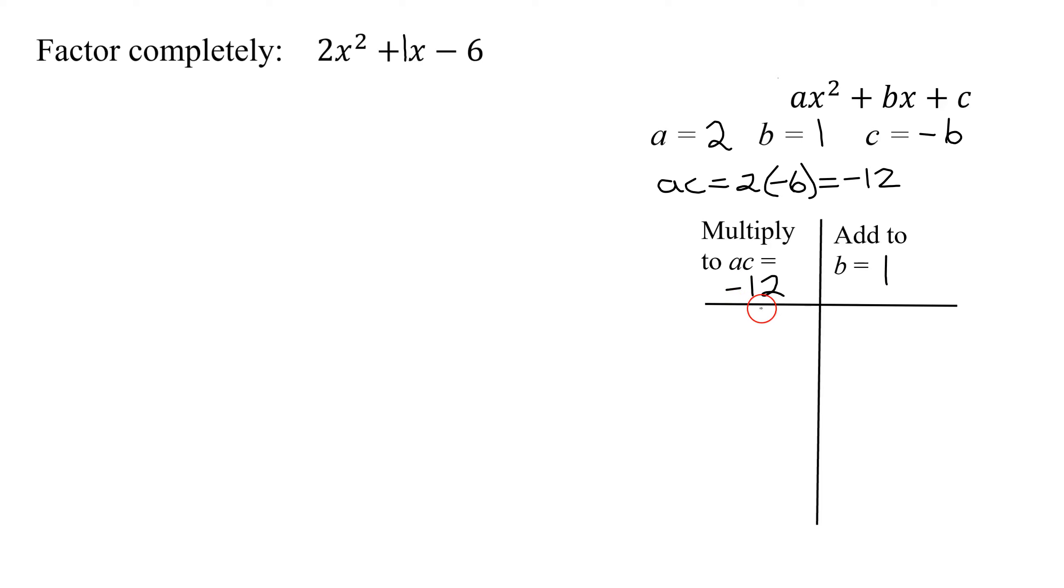Since my two numbers multiply to a negative, that means they have opposite signs. And since they add to a positive, the one with the bigger absolute value has to be the positive number. So I'm going to start with negative 1 and 12. They definitely multiply to negative 12, and negative 1 plus 12 adds to positive 11, not the number I'm looking for.